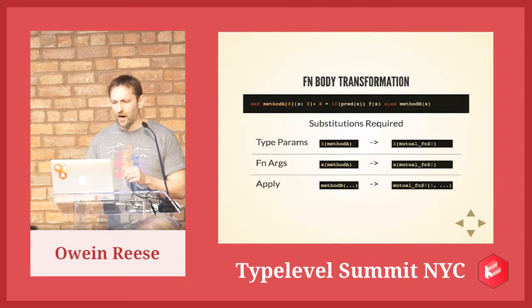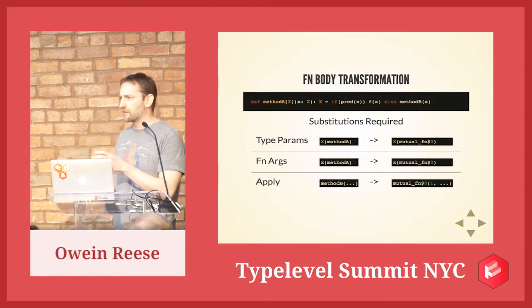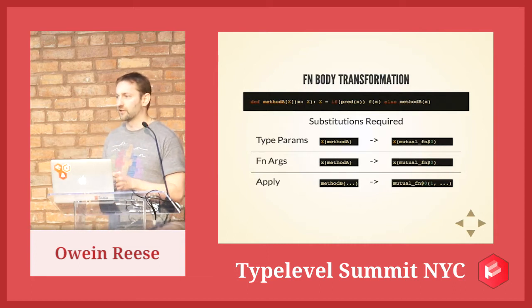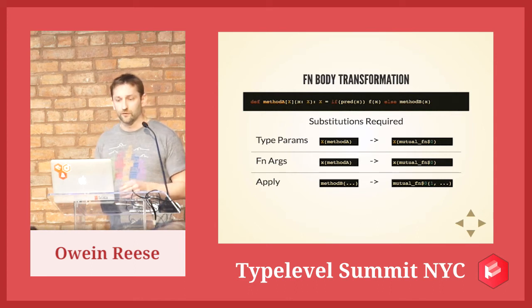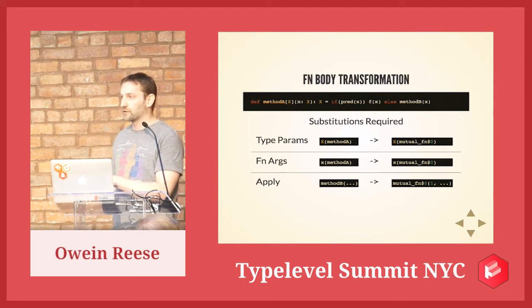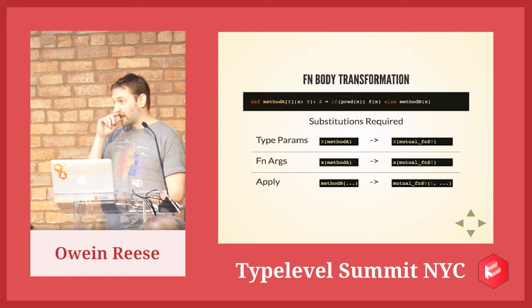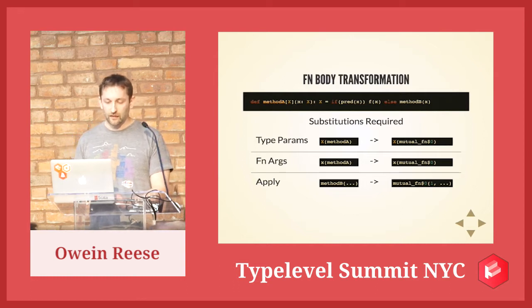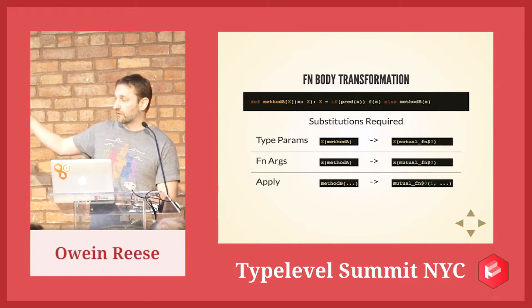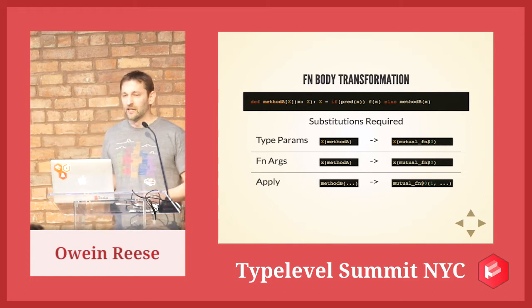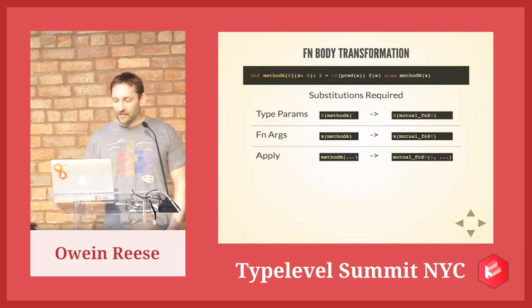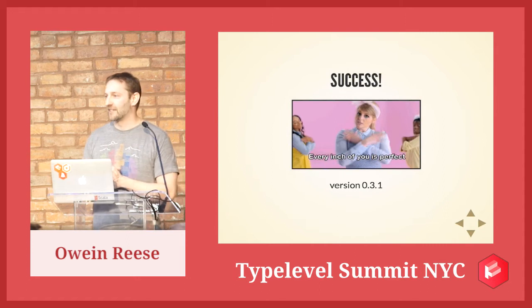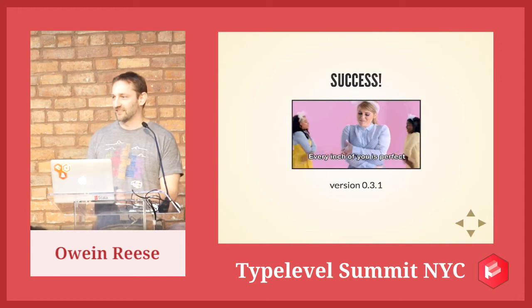To do this at the compiler level, there are a couple of things that have to be done. I'm taking the method body of method A and putting it into a secondary function which is private, final, and should be invisible to any library user of your code. I'm transferring ownership of both the type parameters and the arguments over to this new function so that any additional compiler plugins you might use can still work. I'm also replacing calls to method B, C, D, or E — wherever they are in that mutual recursive state — with calls to this mutual function plus the correct index.